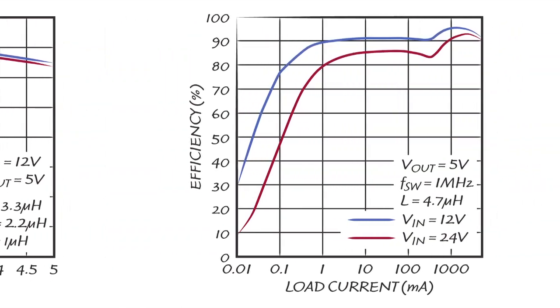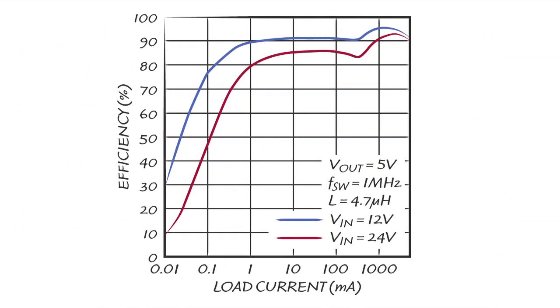On the right is a logarithmic plot where efficiency at small loads can be observed. Because of its ultra low quiescent current and burst mode operation, the LT8640 can achieve efficiencies of around 80% at just 100 microamps of load and 90% with a 1 milliamp load.